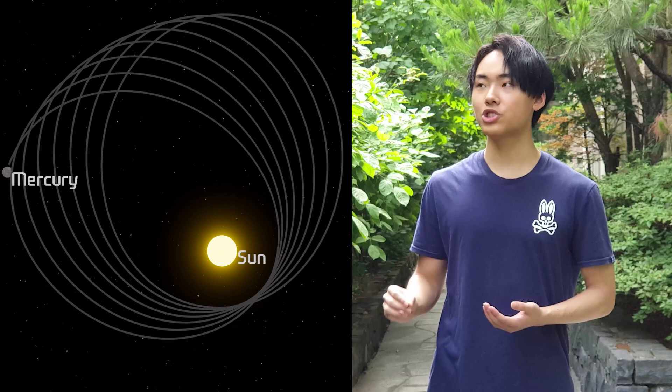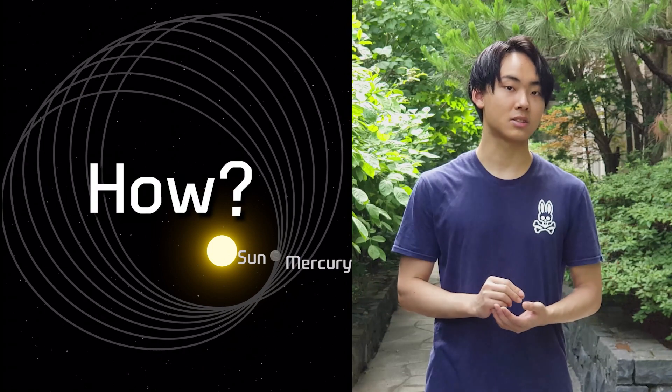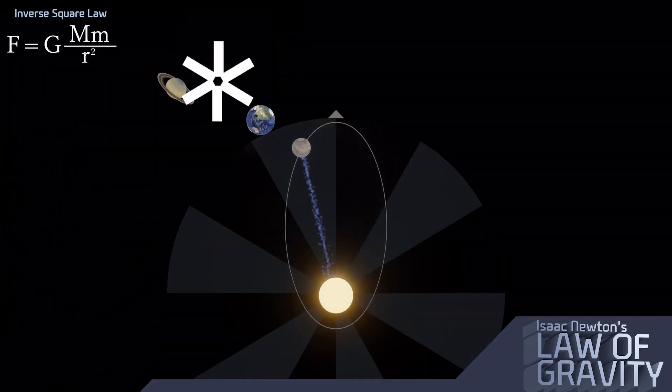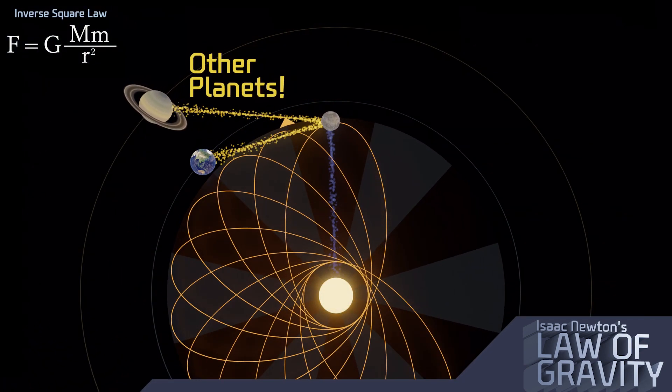Precession was actually observed in Mercury long before, which confused scientists. Newton tried to solve this with his law of gravity's inverse square law, to claim that precessions could form if there are other planets altering Mercury's orbit.